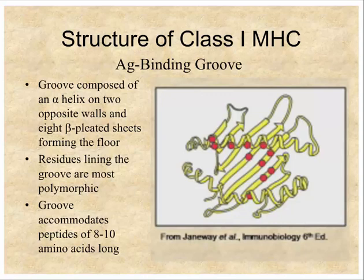The class 1 peptide-binding groove accommodates approximately 8 to 10 amino acids in length, which is why T cell epitopes are roughly 8 to 10 amino acids. Some T cells can recognize slightly larger peptides, but in class 1 molecules, 8 to 10 amino acids is the size that fits into the groove.